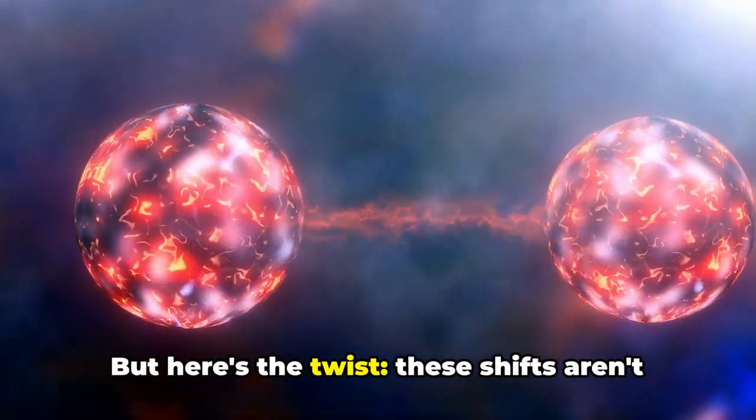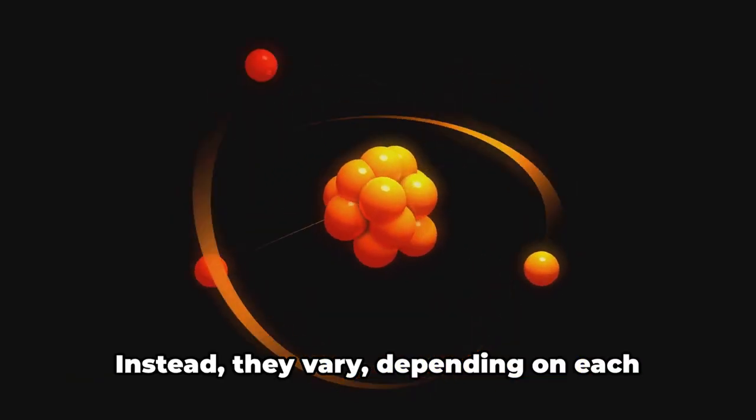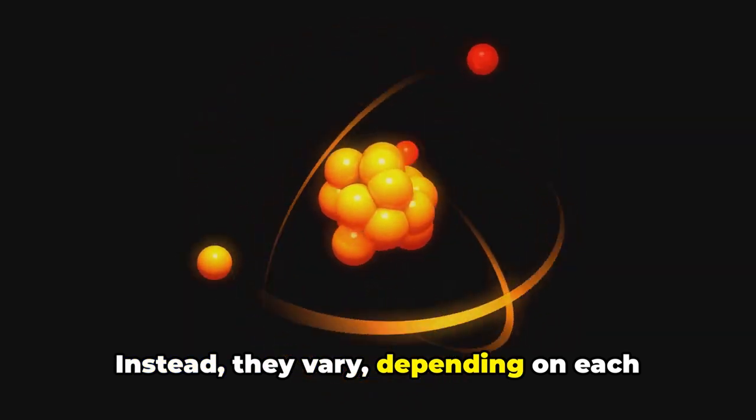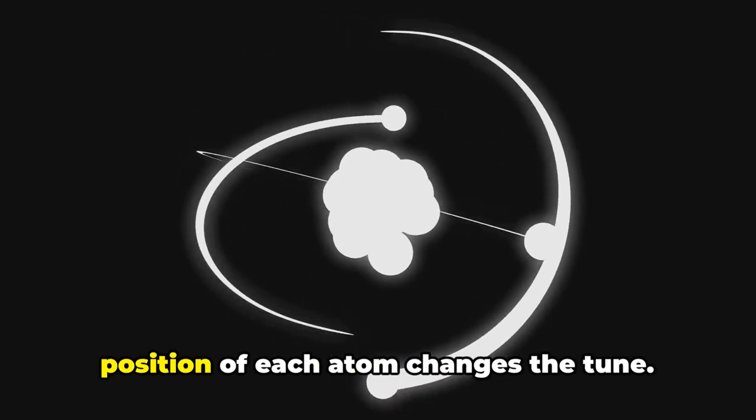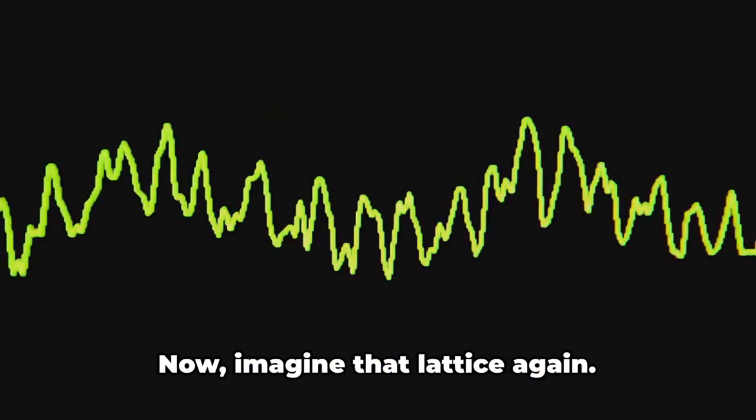But here's the twist. These shifts aren't uniform across the lattice. Instead, they vary depending on each atom's location within the grid. Like a game of atomic musical chairs, the position of each atom changes the tune.